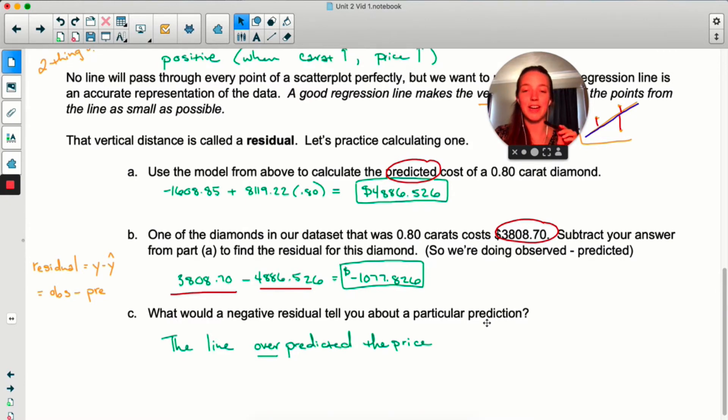So just written out kind of more formally, a residual is when you take y minus y hat. In other words, observed minus predicted. Now in part C, you identified that if you have a residual that's negative, your line is over-predicting. Same idea here. A residual can be positive or negative. And the fact that it's positive or negative tells you if the line over or under-predicted.